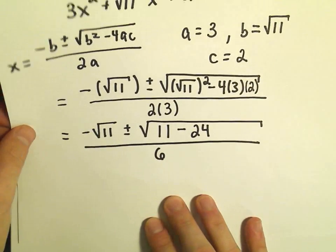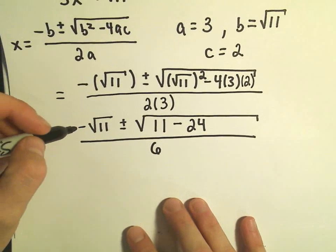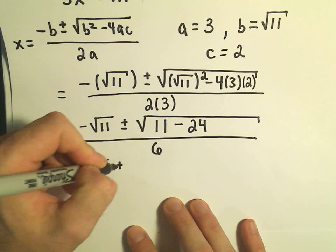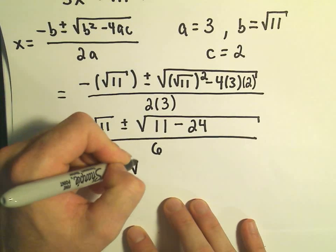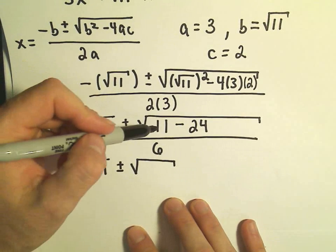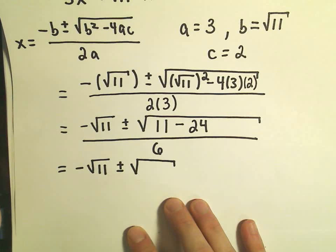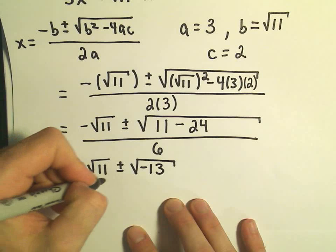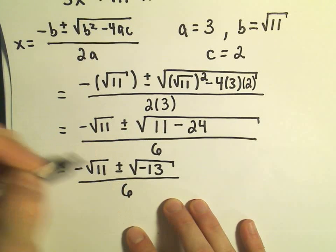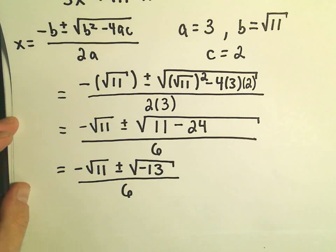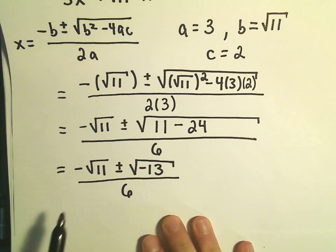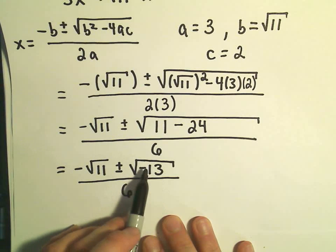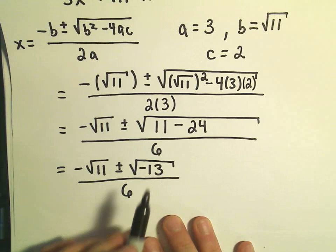Underneath the square root we can simplify a little bit more. We have negative the square root of 11, plus or minus. If we take 11 minus 24, that's going to be negative 13, and we're still dividing by 6. Some people will stop here and say there are no real solutions because the value underneath the square root is negative.